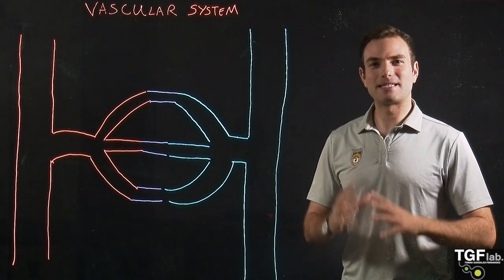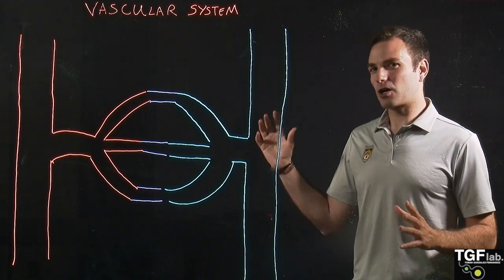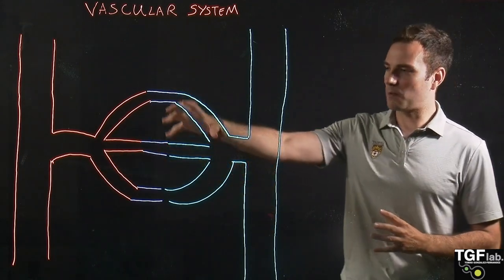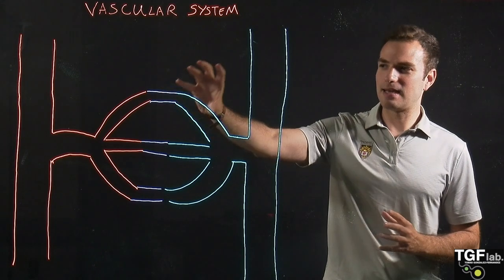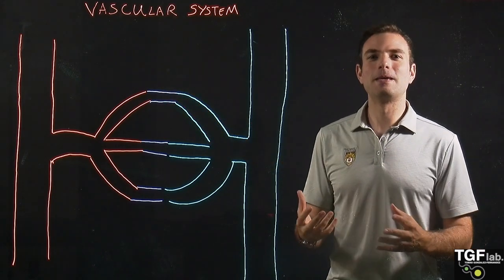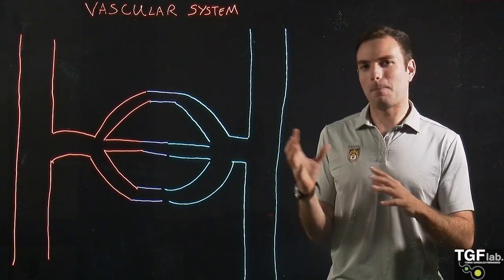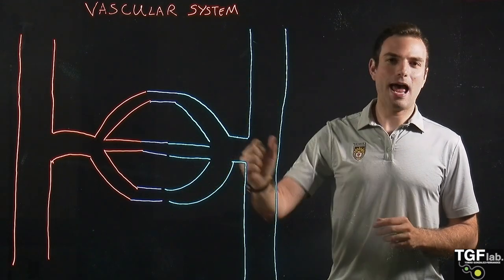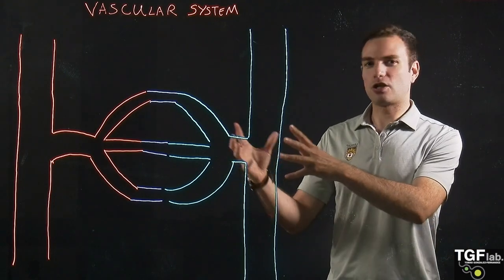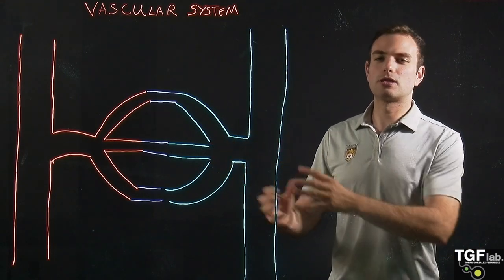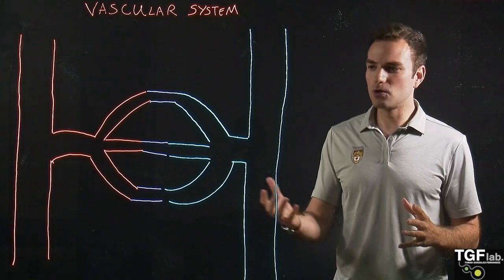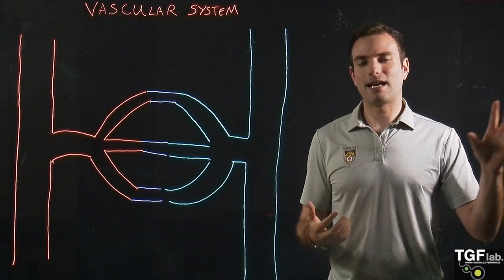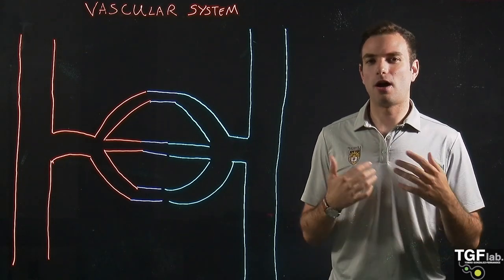The vascular system is the system with all the vessels that are going to take the oxygenated blood and nutrients to our tissues. In our tissues we have the exchange of different byproducts, gases, and nutrients. Finally, it is going to collect all the degradation solutes from the tissues and the CO2, and move it back to the heart so the heart can send it to the lungs for oxygenation.